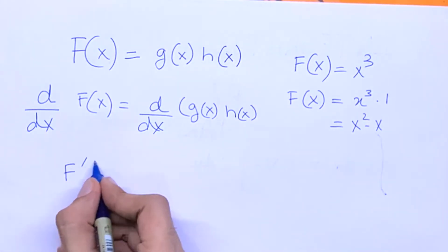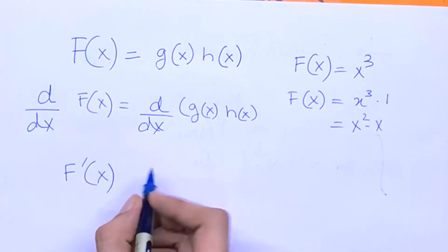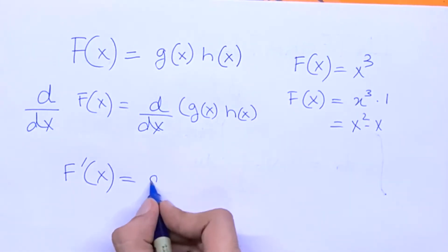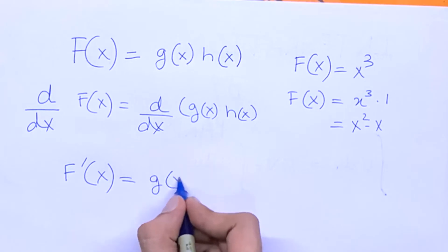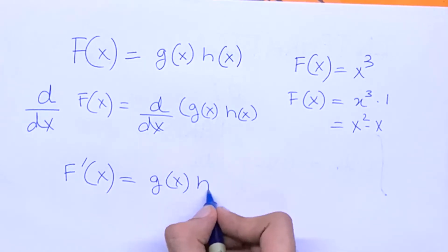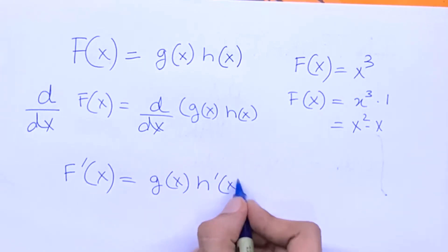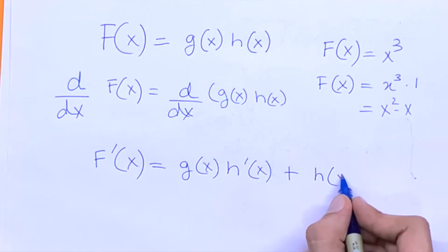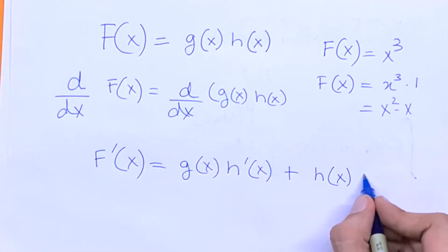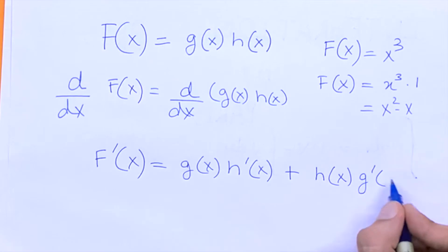So we have f prime of x is equal to g of x times h prime of x plus h of x times g prime of x.